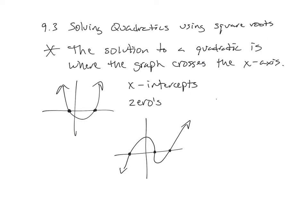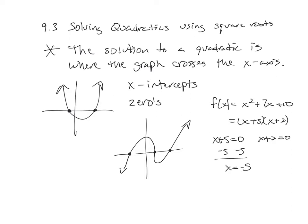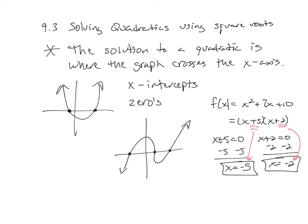We've done solving where we factored — what times what is 10 that adds up to seven — giving us five and two. Then x plus five equals zero and x plus two equals zero. We did this in Chapter 7; we found the zeros by taking the opposite of what you see. Positive five becomes negative five, positive two becomes negative two. Now we're going to use solving using square roots, which is probably the easiest one out of all of them.